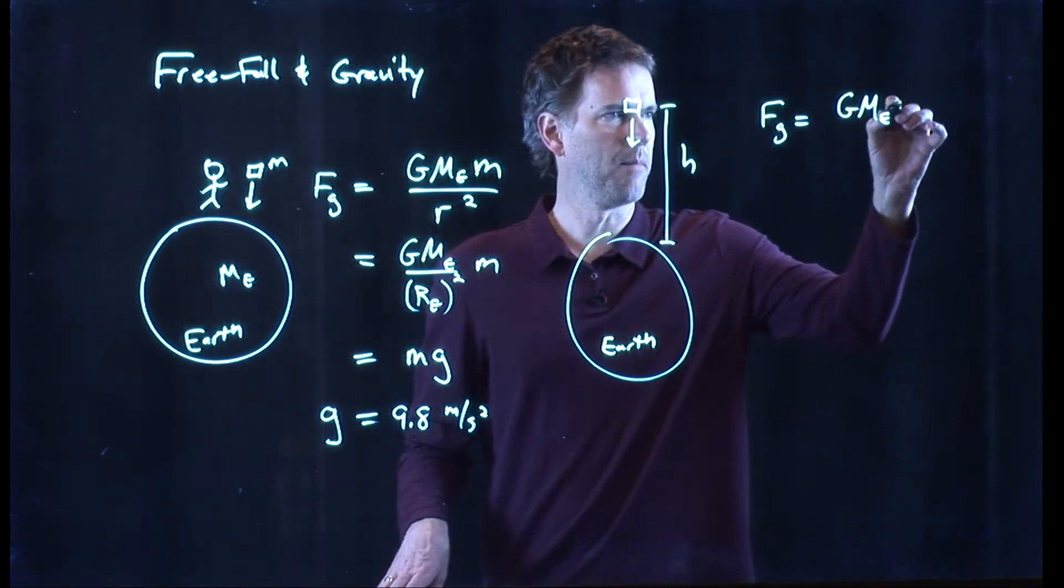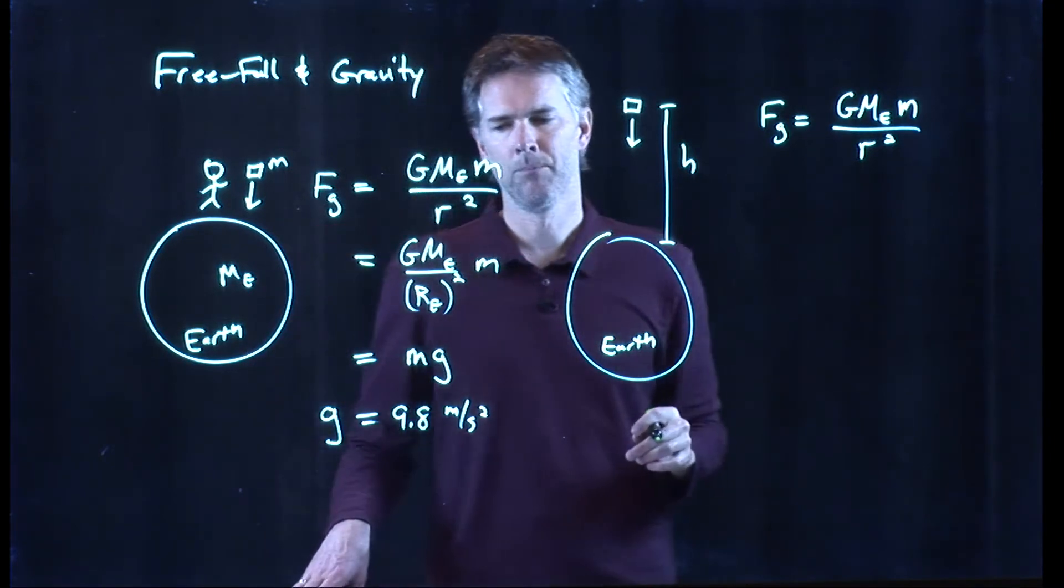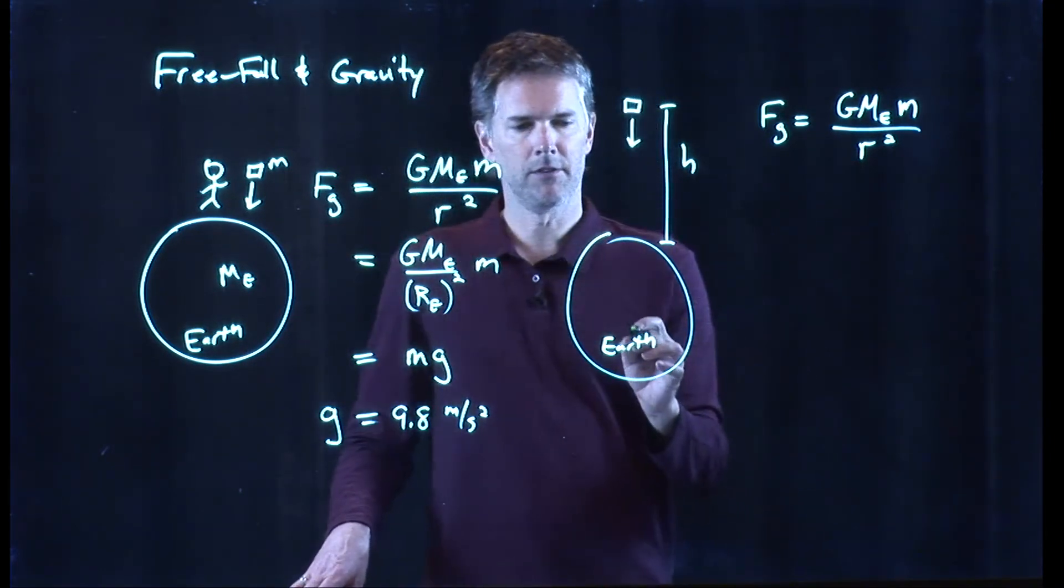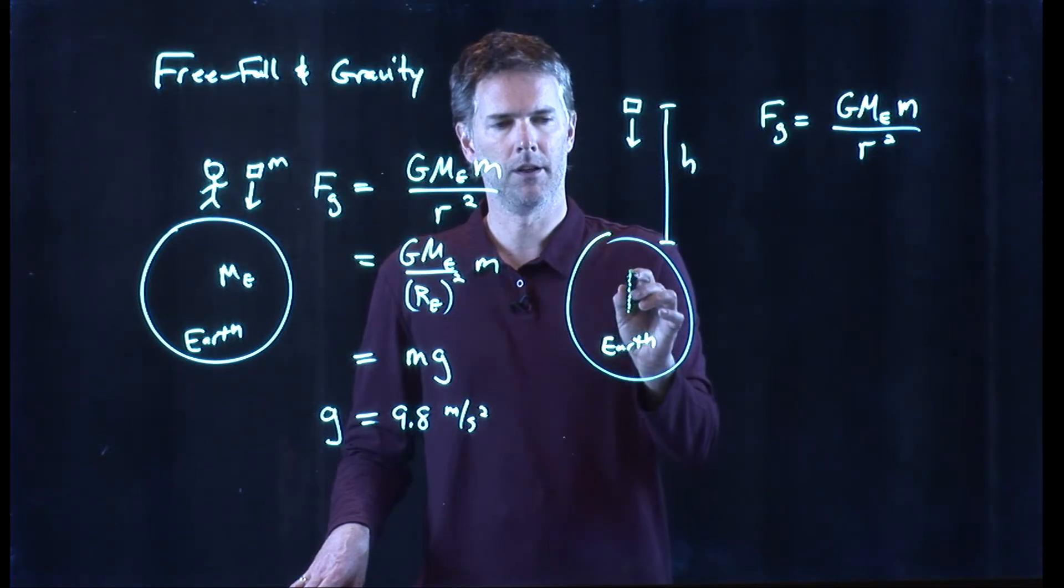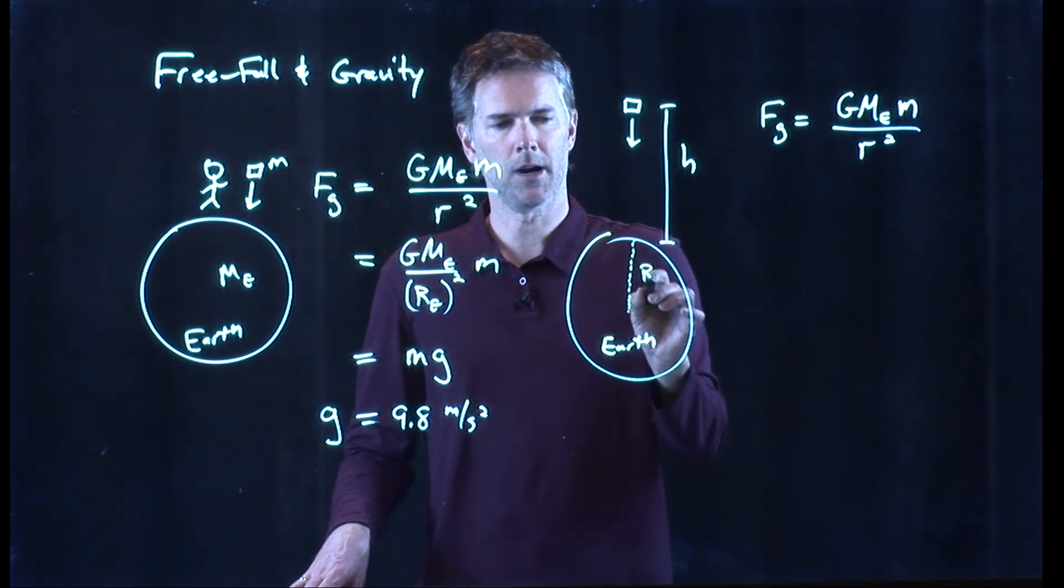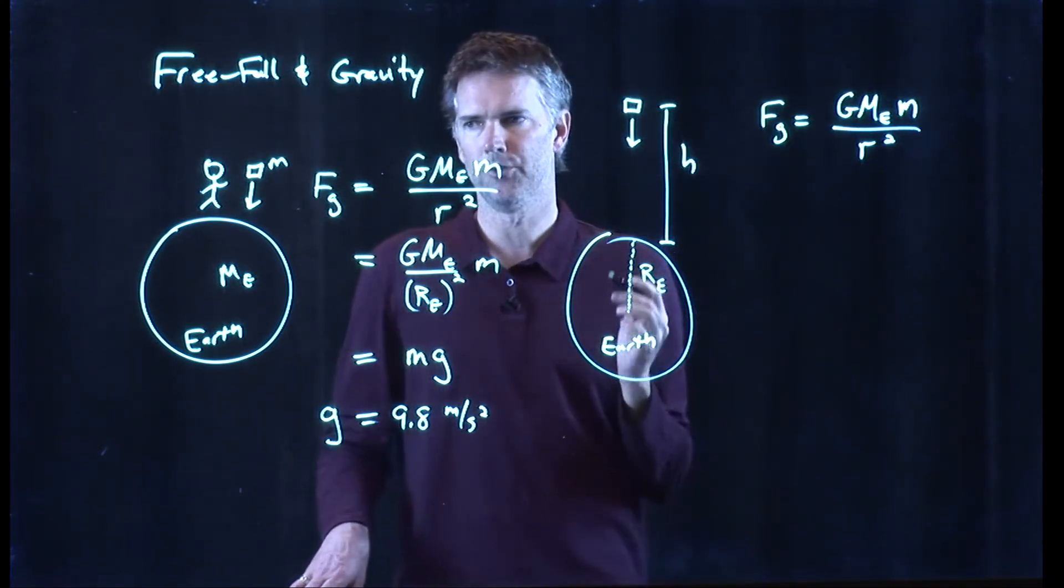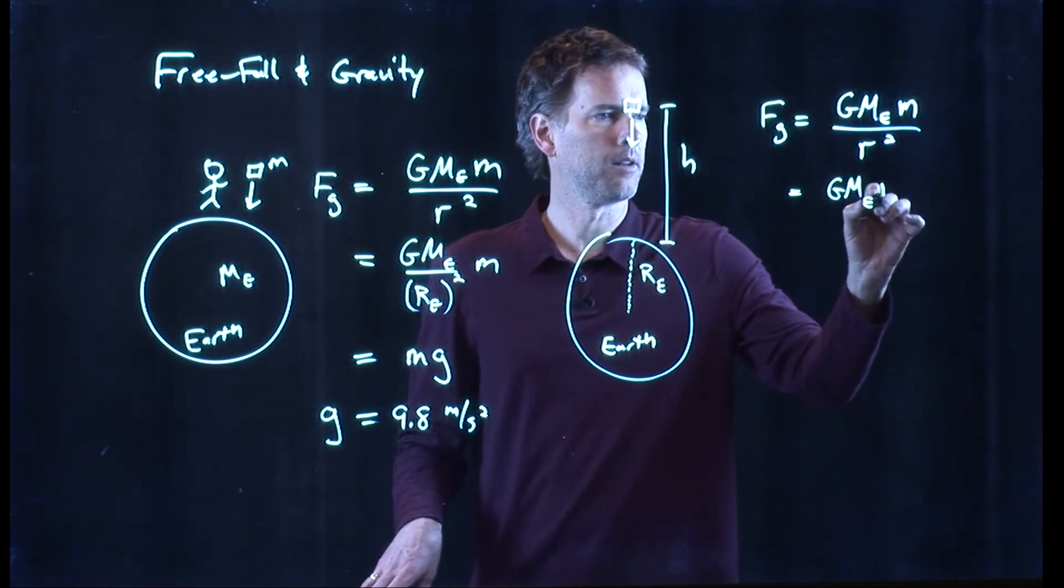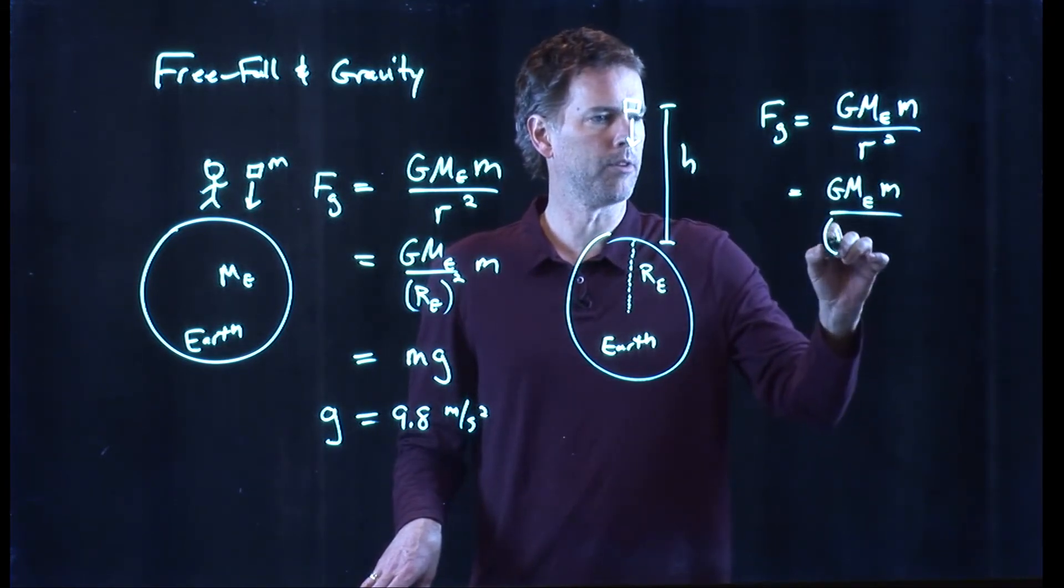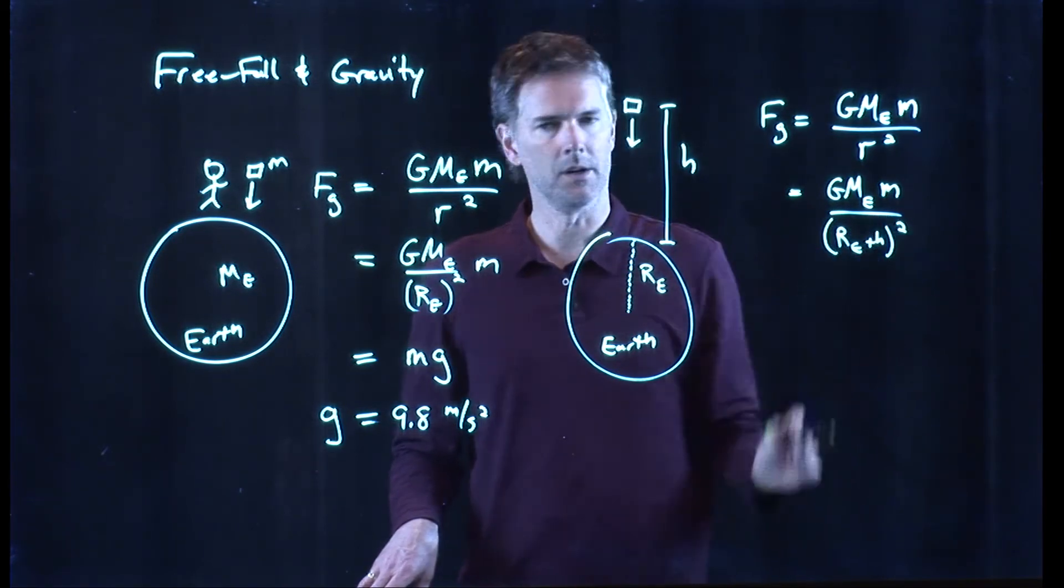G mass of the earth mass of the object divided by r squared, but now r is the distance from the center of the earth and so you have to not only include the radius of the earth but you have to include the altitude h. So this becomes GMₑ times m over (rₑ + h) quantity squared.